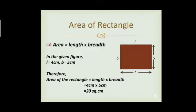Area of rectangle and square. First, area of rectangle. Area is the portion a closed figure covers. The formula for rectangle area is length multiplied by breadth. In the given figure, L is 4 cm and B is 5 cm. Since opposite sides are the same, L equals 4 and B equals 5.